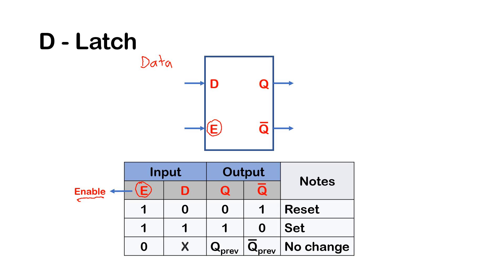The E here is what we call an Enable. Those are the two inputs, and we have two outputs: Q and Q-bar. Q and Q-bar are complements of each other — if Q is zero then Q-bar is one, and if Q is one then Q-bar is zero. They are opposite of each other. Usually I would ignore Q-bar and only refer to Q.